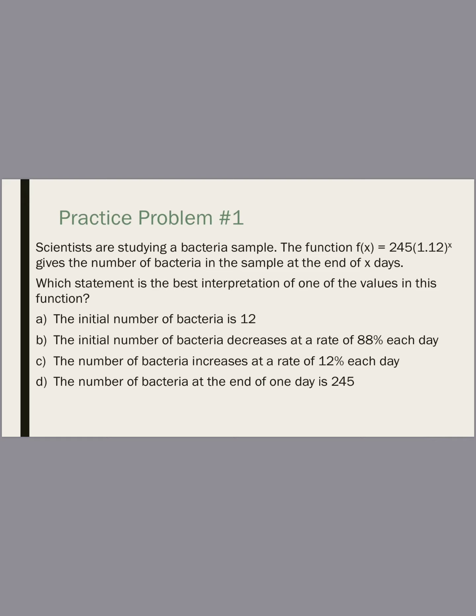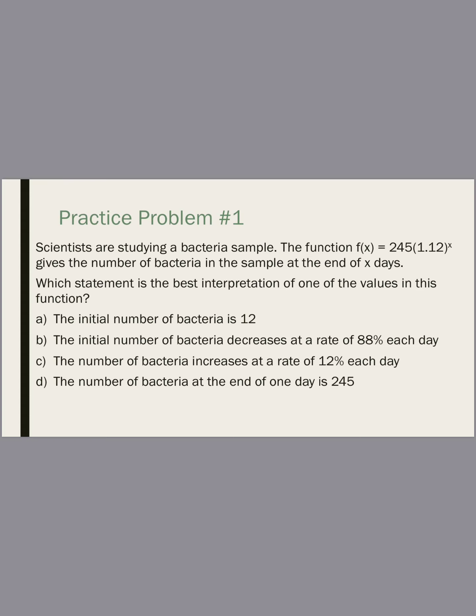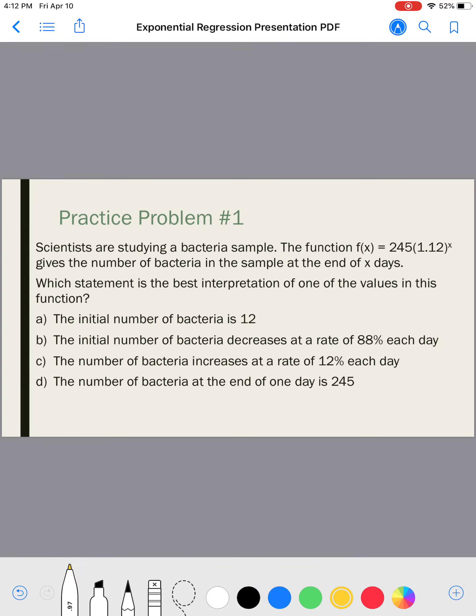All right. Practice problem number one. Scientists are studying a bacteria sample. This is the function. It gives the number of bacteria in the sample at the end of X days. Which is the best representation of one of the values in this function? Well, before I even start, I want to go ahead and mark up this equation before I even look at my numbers. I know my A value is 245. So that means I started with 245 bacteria, period.